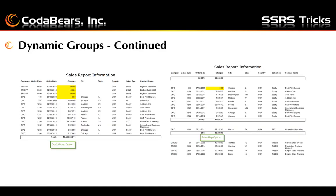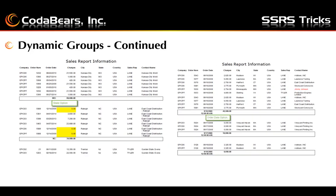Here we can see our examples of the output when we choose the state option and when we choose the order date option. As you can see, the order date label is not formatted since I am using an expression for the label. But I expect that using a more complicated formula which includes the formatting could also be done. So this option shows not grouping at all, and this option shows the sales rep option. Here we can see the state group option and the order date option.